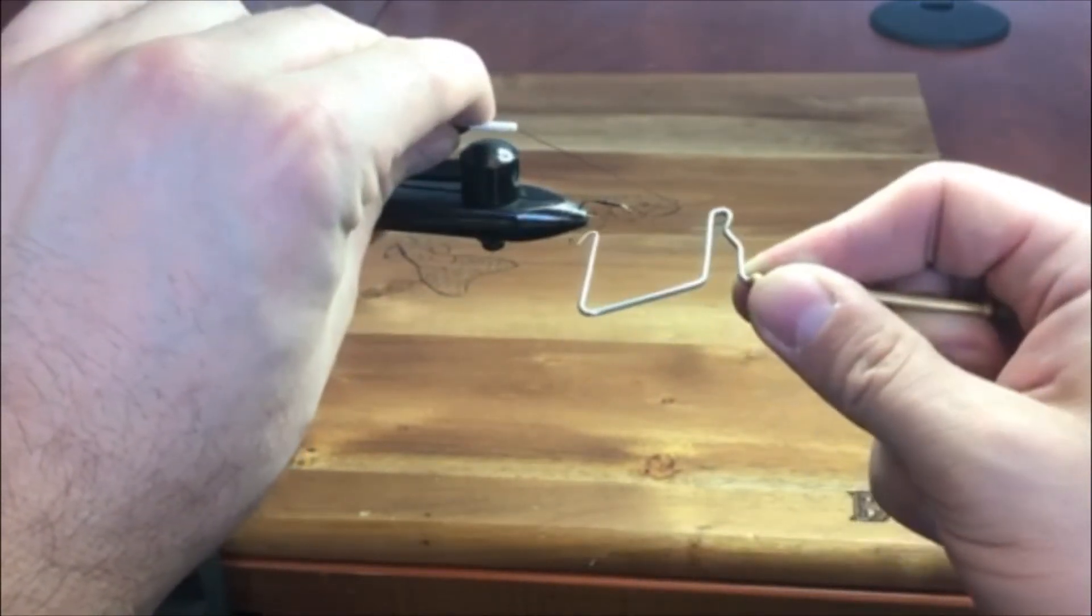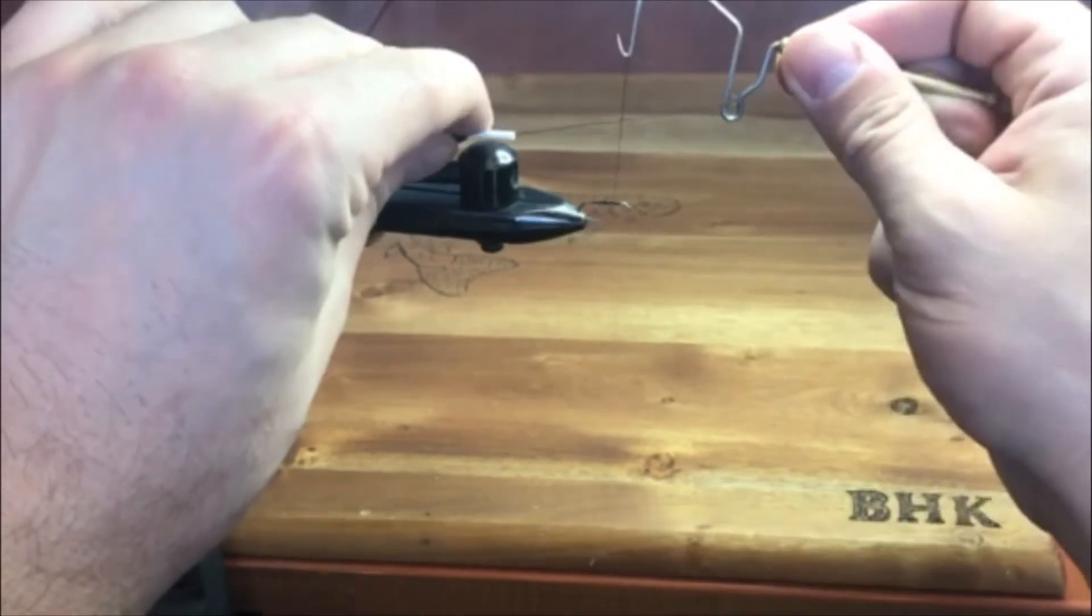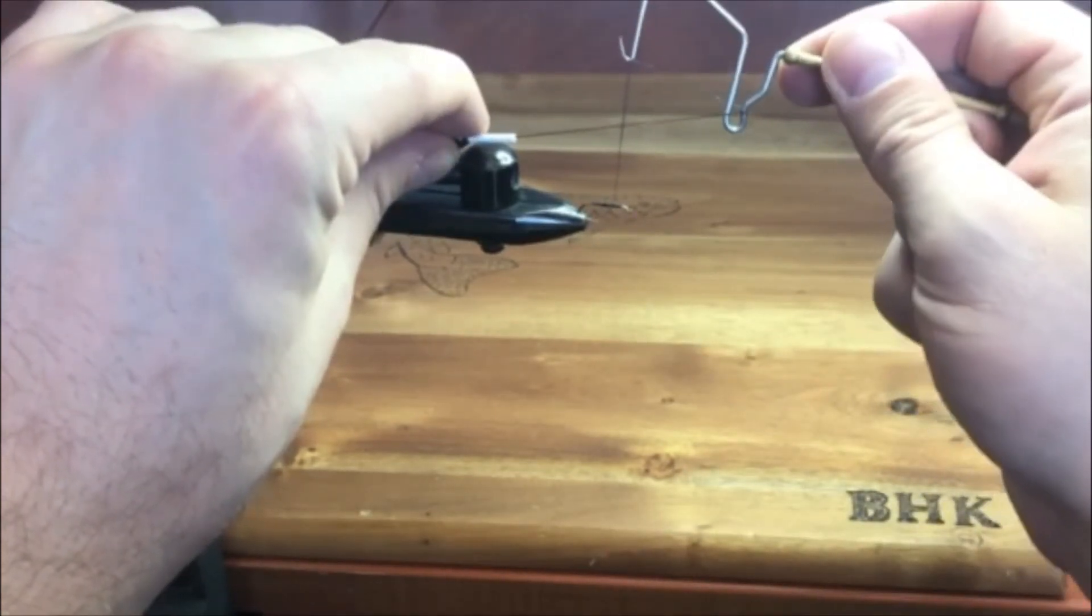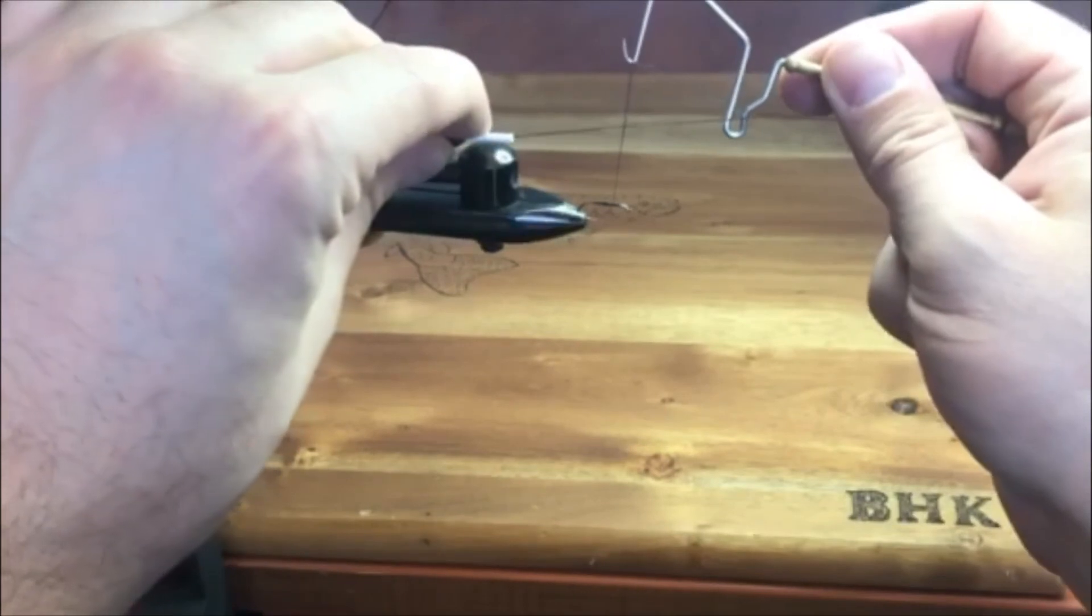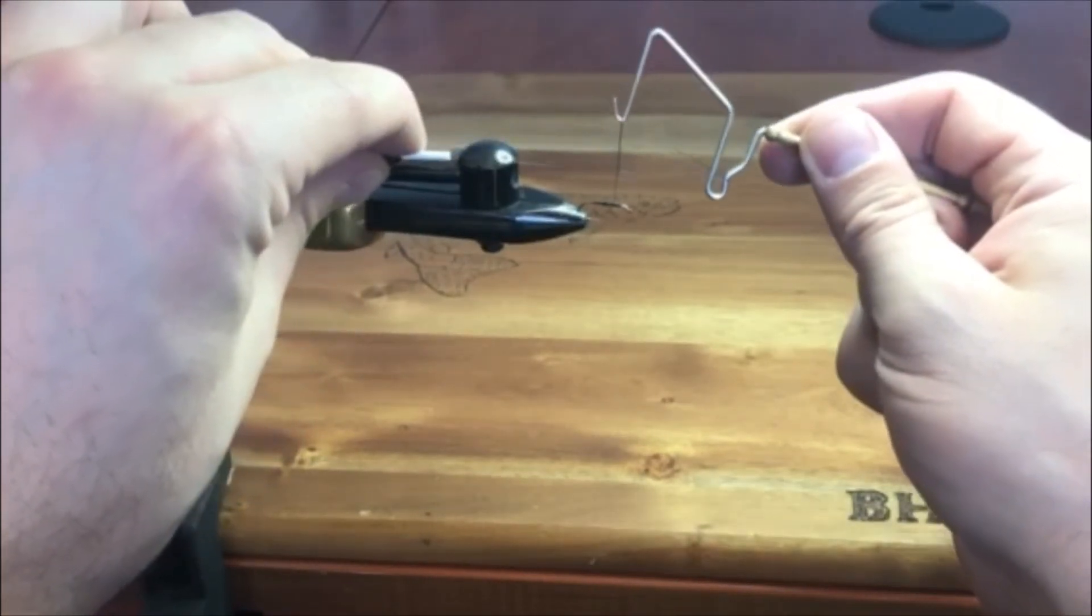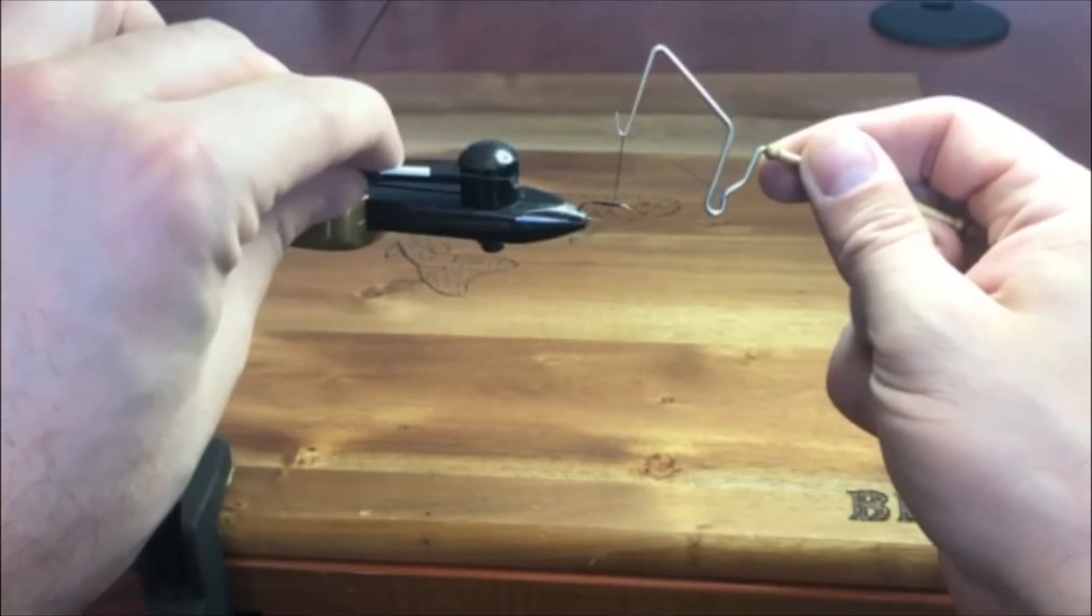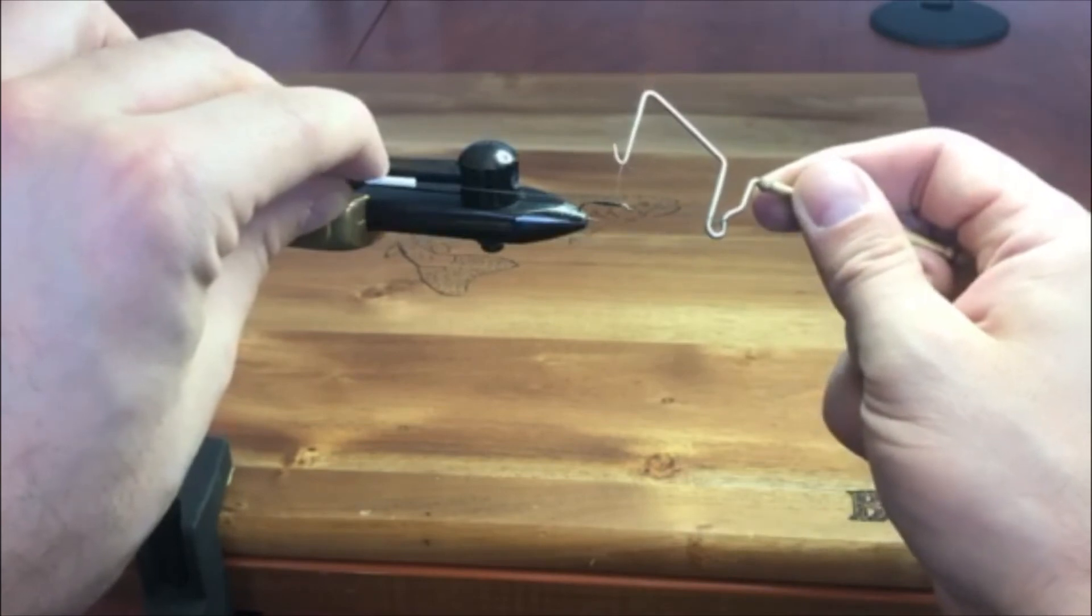Raise the whip finish up which flips it upside down and we create that number four or the X. I'm going to bring that indentation or the intersection of the thread down to the hook shank where I'm going to go underneath and wrap with a few revolutions around.